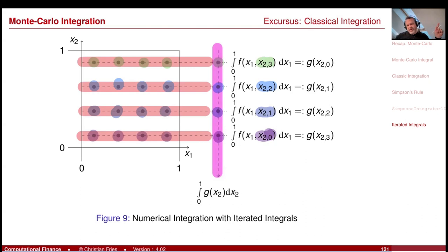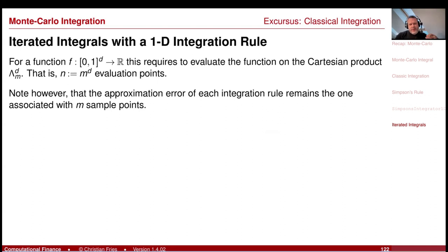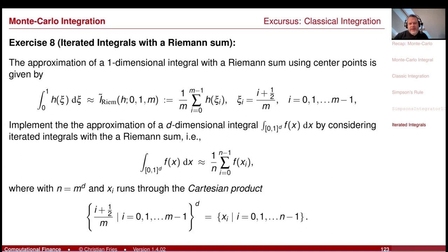So if you have a one-dimensional integration rule and lift it to higher dimensions using iterated integrals, you arrive at a Cartesian product of function evaluation points. This will be important for understanding why the Monte Carlo method breaks the curse of dimensionality — why Monte Carlo doesn't have the issue that sample points grow exponentially in the dimension. With iterated integrals you need m^d evaluation points, where m is the number of points for the one-dimensional rule.